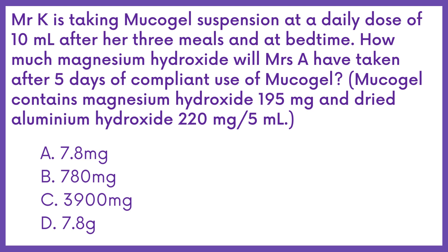Mr. K is taking mucogyl suspension at a daily dose of 10 mL after her 3 meals and at bedtime. How much magnesium hydroxide will Mr. K have taken after 5 days of compliant use of mucogyl? It is given that mucogyl contains magnesium hydroxide 195 mg and dried aluminum hydroxide 220 mg per 5 mL.